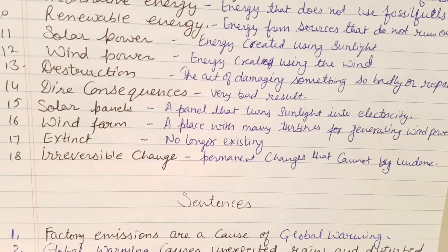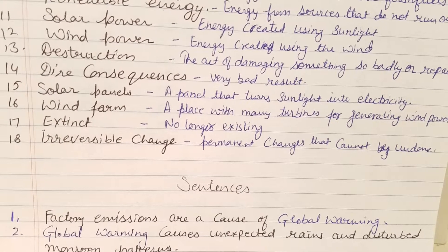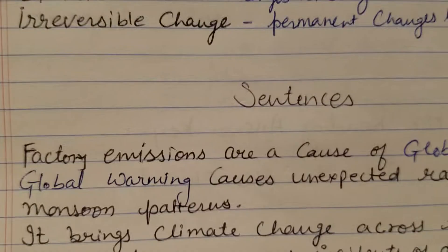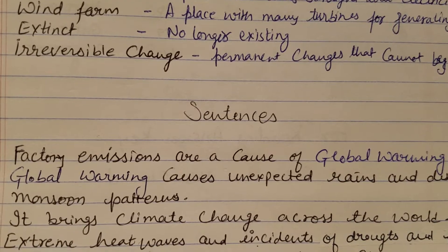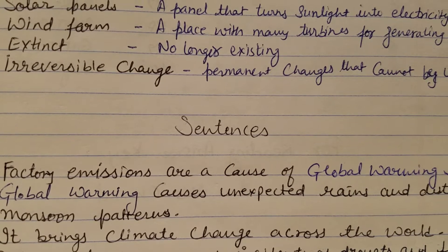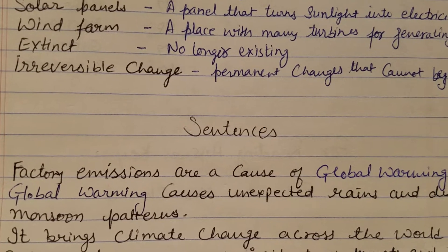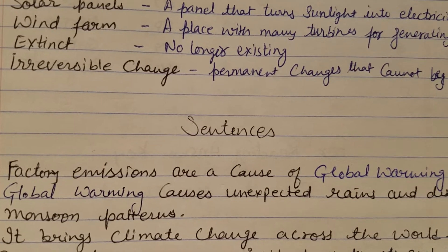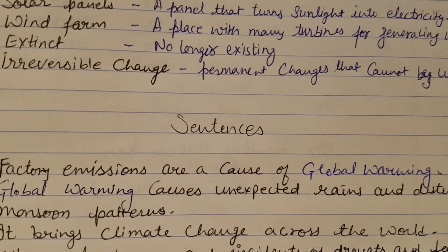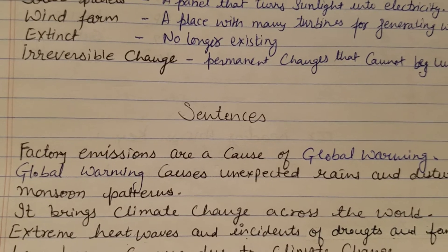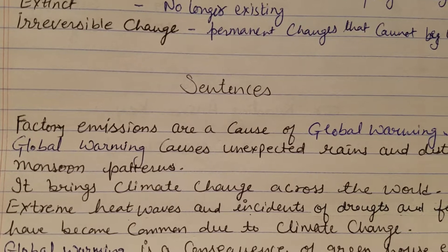Useful sentences: Factory emissions are a cause of global warming. Global warming causes unexpected rain and disturbed monsoon patterns. It brings climate change across the world. Extreme heat waves and incidents of droughts and famine have become common due to climate change.